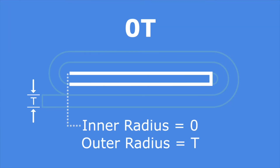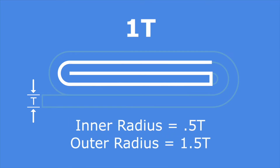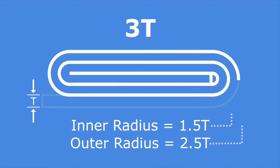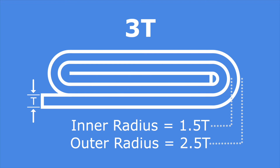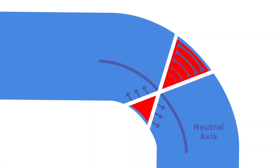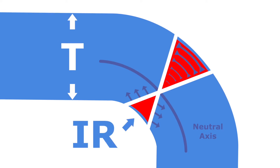When testing the flexibility of pre-painted metal, a T-bend test is routinely done. The key to understanding what is happening to the coated metal is knowing the inner radii of the bend. In a roll forming operation, each bend has been designed with a known inner radii. The figure below shows typical T-bends using NCCA nomenclature, where T is the thickness of the metal. The inner and outer bend radii are shown in the table below.